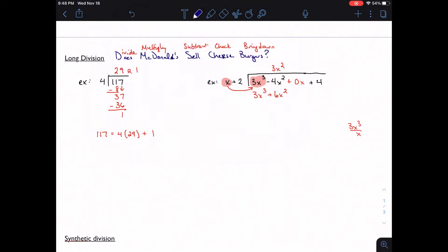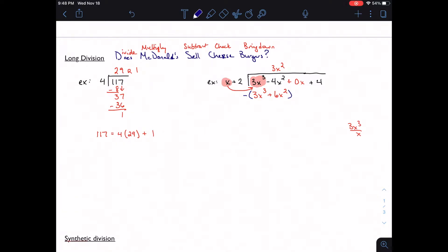I'm going to subtract, so 3 minus 3 is 0. Negative 4 minus 6 is negative 10. And I'm going to bring down my next term. I like to bring down the zeros to keep organized. I think it's easier to stay organized.